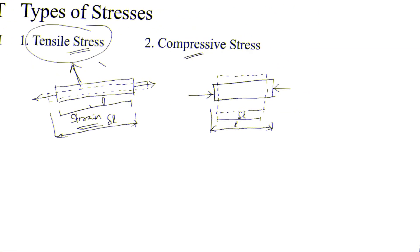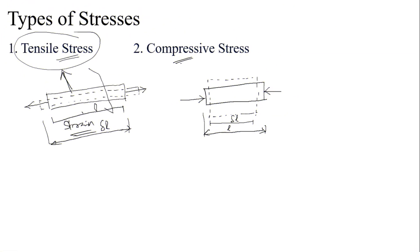Due to tensile stress, the length increases and cross-sectional area decreases. Whereas for compressive stress, the length decreases and the cross-sectional area increases. The corresponding strain for compressive loading is called compressive strain.